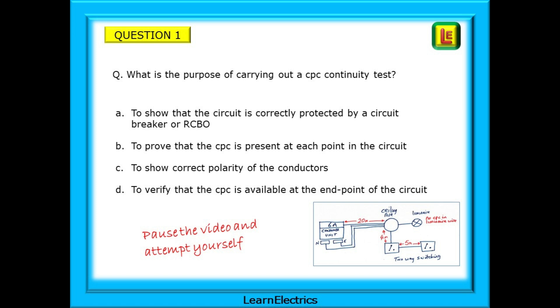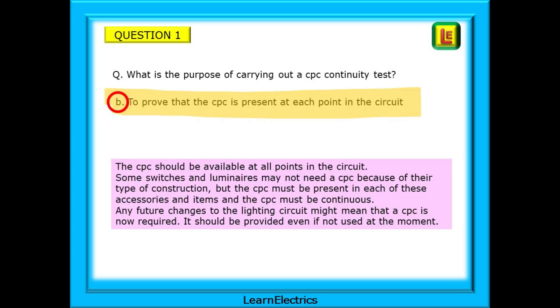The correct answer is B. We want to prove that the CPC is present at each point in the circuit. The CPC should indeed be available at all points in the circuit. Some switches and luminaires may not need a CPC because of their type of construction but the CPC must be present in each of these accessories and items and the CPC must be continuous. Any future changes to the lighting circuit might mean that a CPC is now required. The customer shouldn't expect the house to be rewired just because you didn't supply a CPC when you installed that new lighting circuit. The CPC should be provided even if not used at the moment.